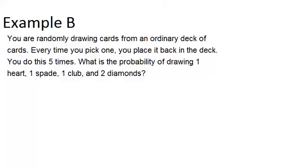So this time this is also a multinomial distribution because there are four possible outcomes. You could get hearts, spades, clubs, or diamonds with each draw. So we're repeating this trial five times because we're picking five different cards and keep replacing them each time. So to figure out our probability, we'll start with five factorial because we have five trials.